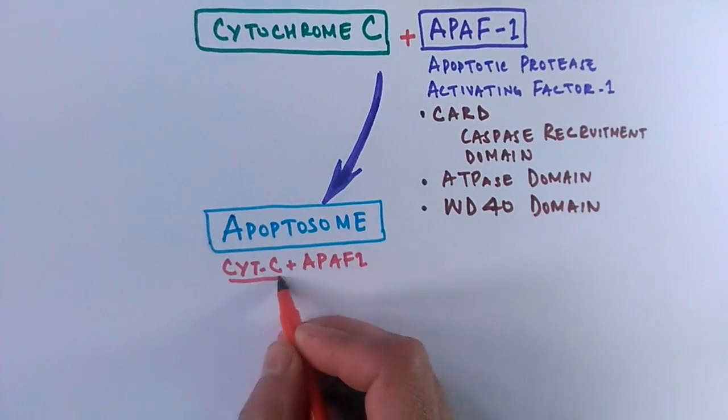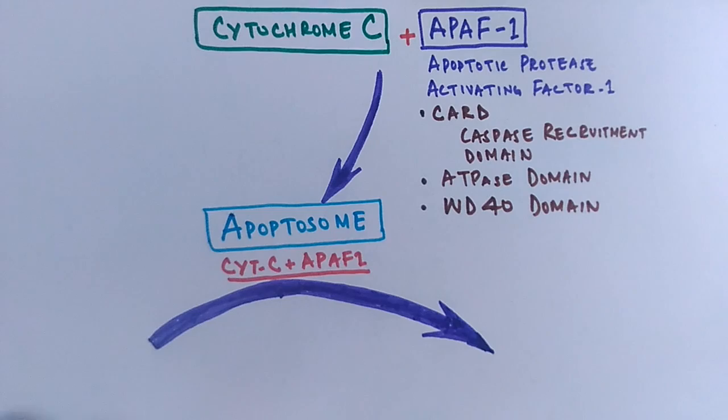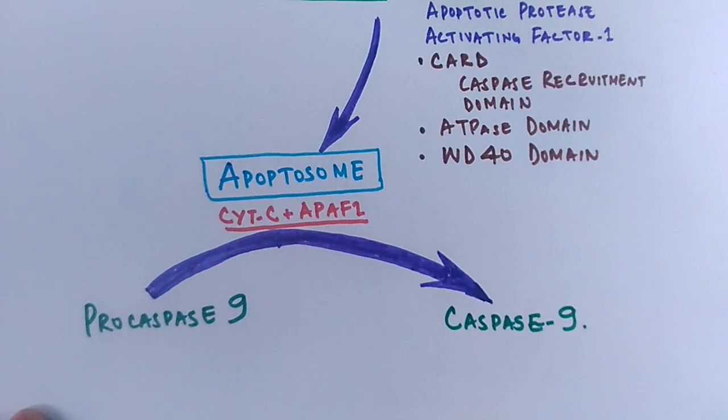It's the central hub for apoptotic activation factors. This apoptosome has capability to activate the pro-caspase 9 to its active form, that's caspase 9, and from there the cascade starts.